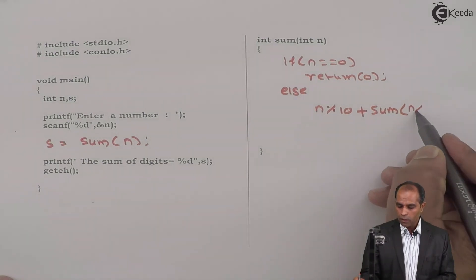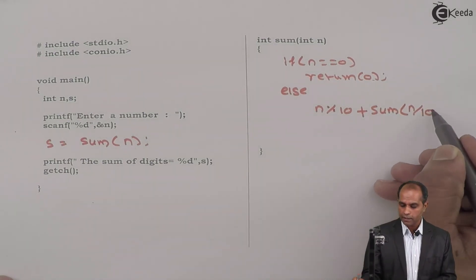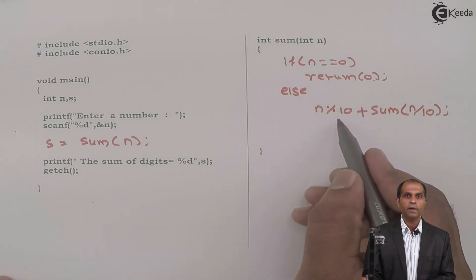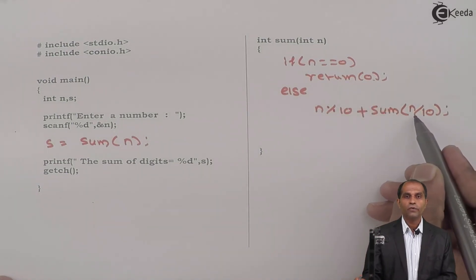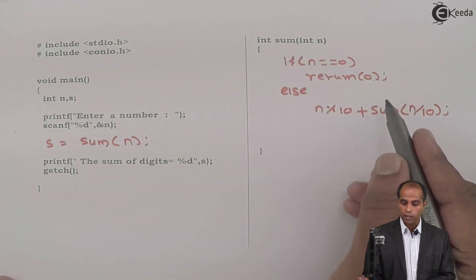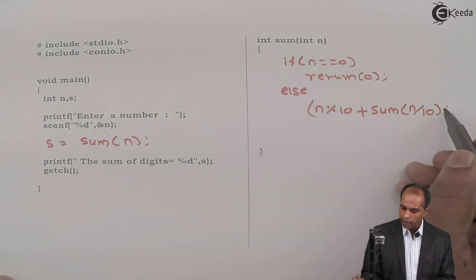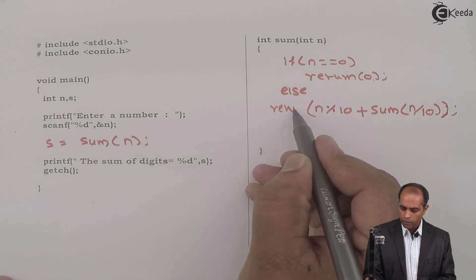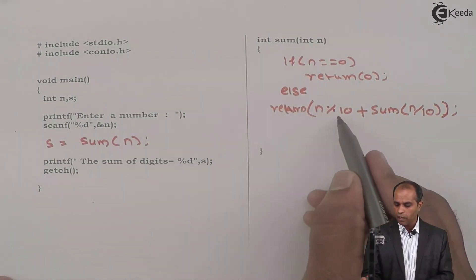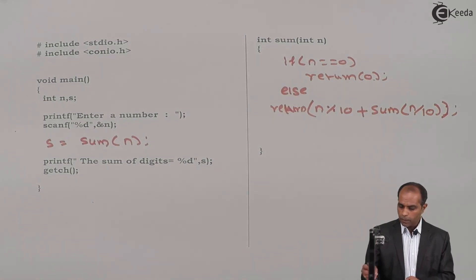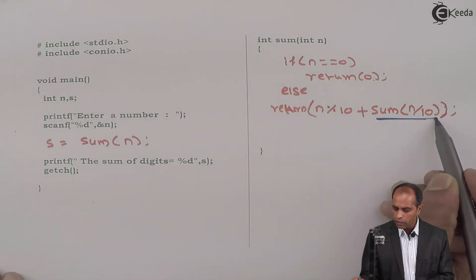Number excluding the last digit that is n by 10. So this 3 from 523, I can obtain 3 by n mod 10. I can obtain 52 from n by 10. So here sum is going to give a call to sum. This time you can store into sum variable or the entire statement can be enclosed in one more return. So I'll say return n mod 10 plus sum n by 10. So here the process of recursion goes in this instruction.